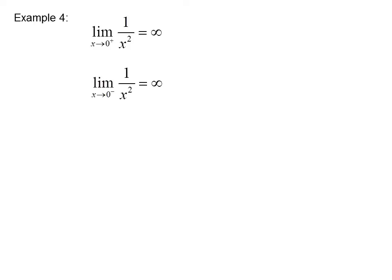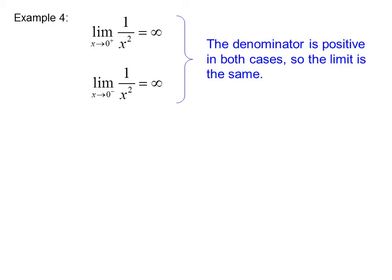Example 4: The limit as x goes to 0 from the right-hand side of 1 over x squared equals infinity, and the limit as x goes to 0 from the left-hand side of 1 over x squared also equals infinity, because the negative signs cancel out. The denominator is positive in both cases, so the limit is the same. Therefore, the limit as x goes to 0 of 1 over x squared equals infinity.